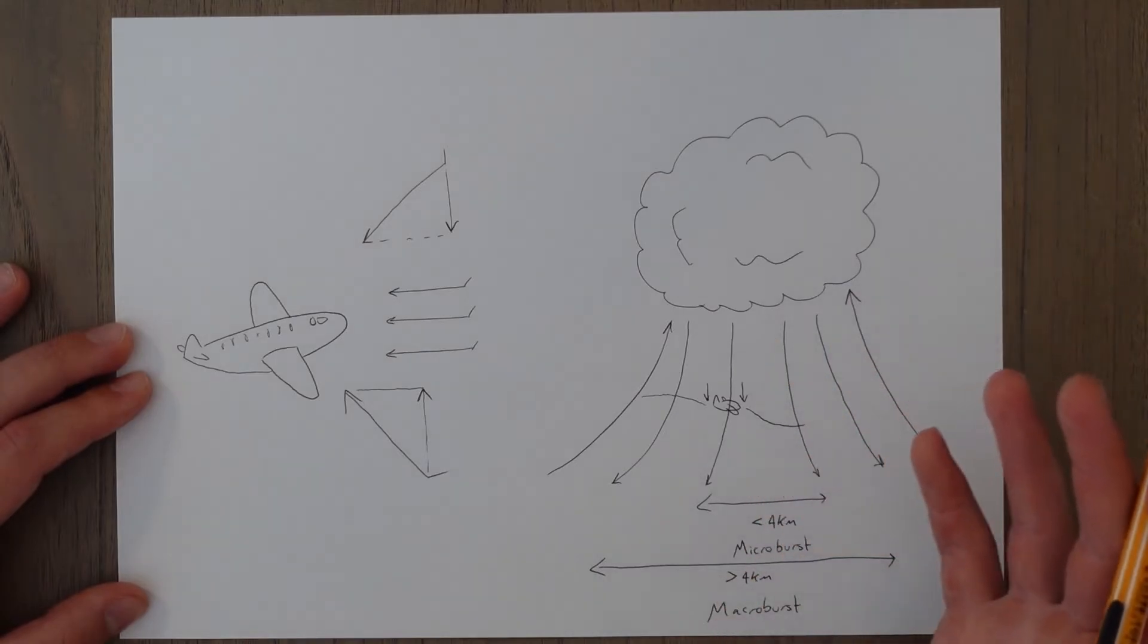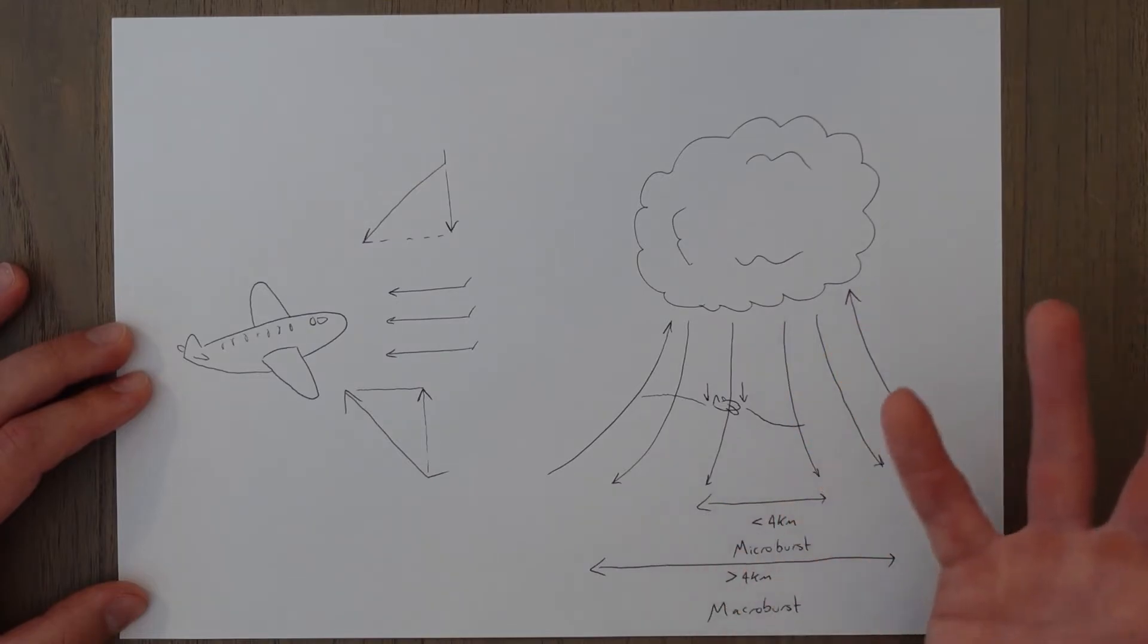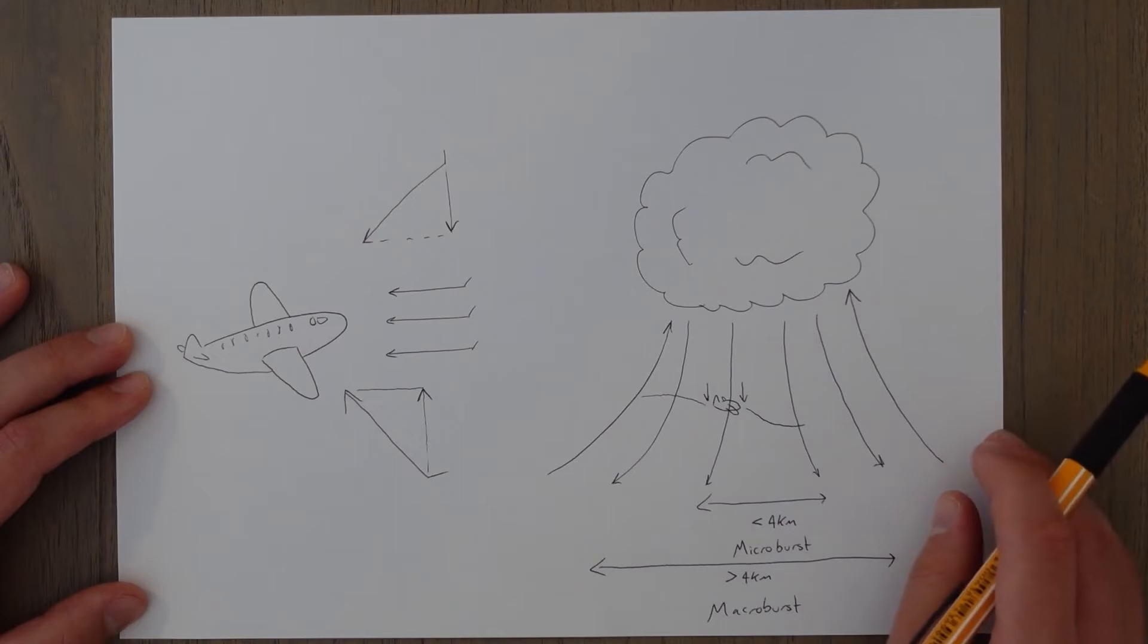Again, this can be a big issue when you're close to the ground because you don't want to be flying lower when you're close to the ground. You want to be getting up above to a safe altitude above any obstacles.